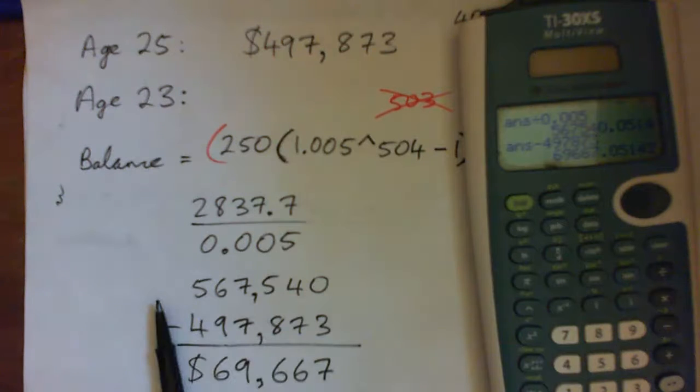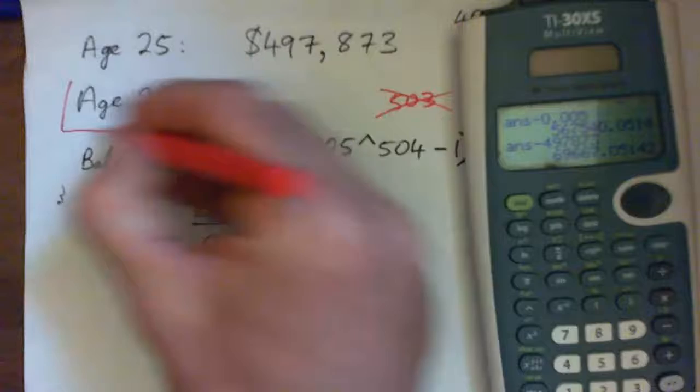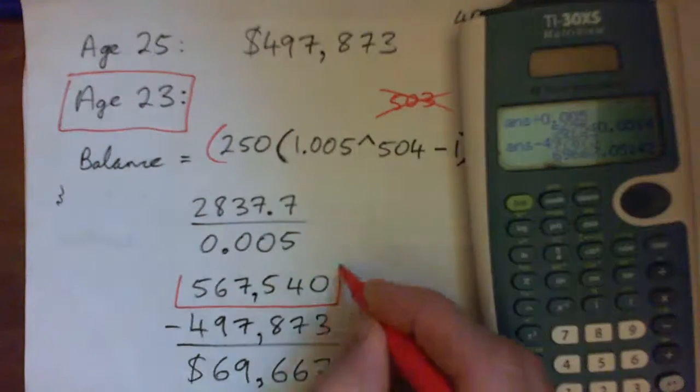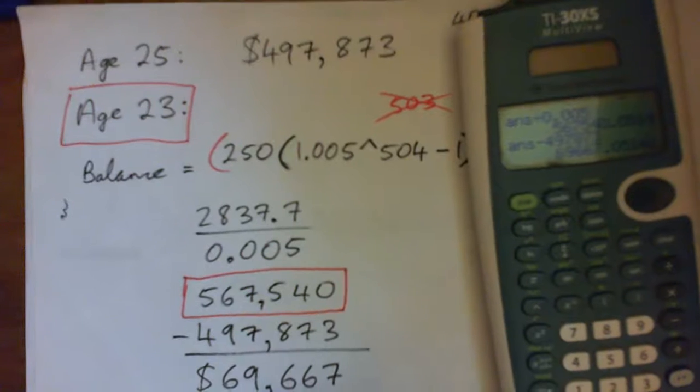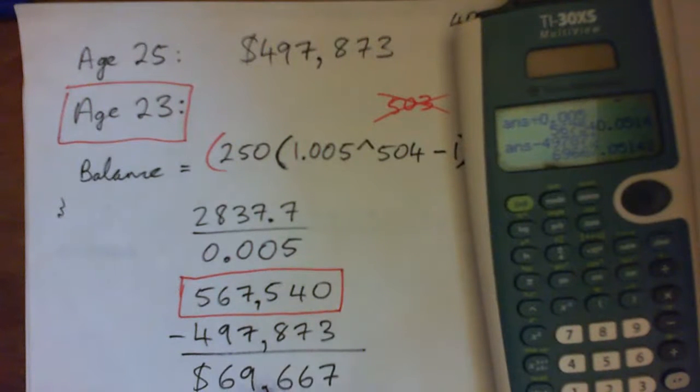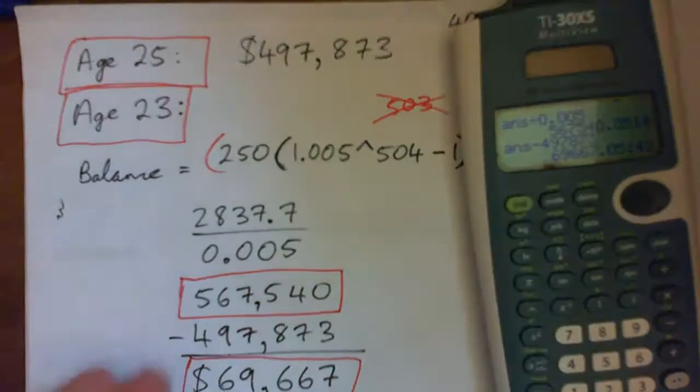So that is the answer. The question was, what will be the size of your nest egg when you retire if you start this retirement scheme age 23? The answer is, that would be the amount. And next up, compare this with the answer from 21. It will be $67,667 more than start working age 25.